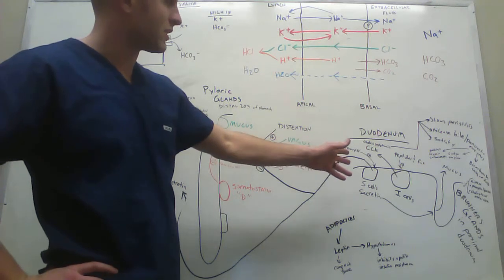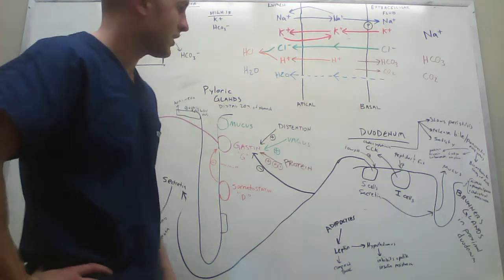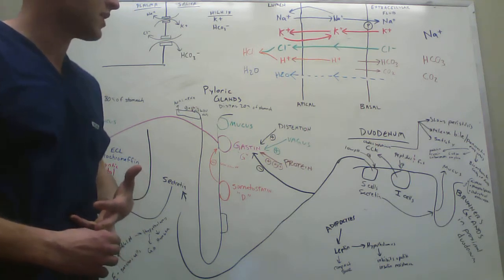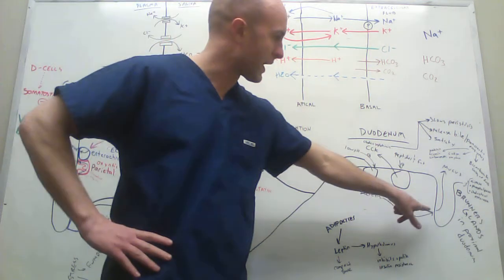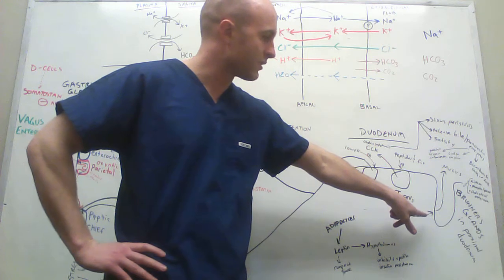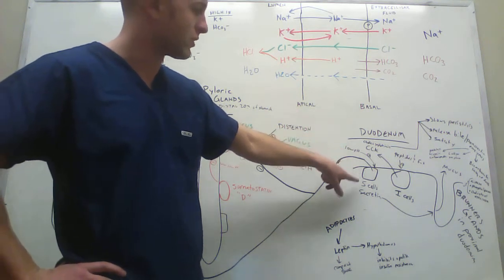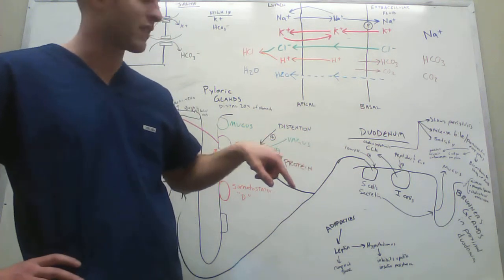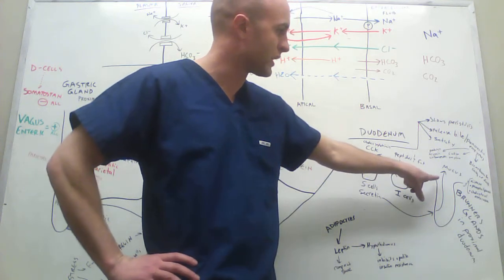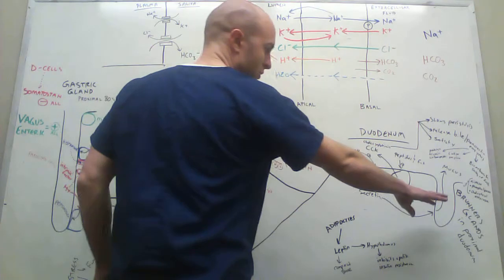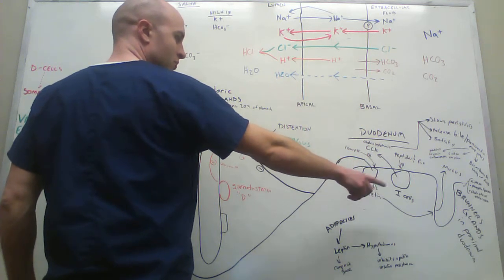These S cells release something called secretin. Secretin has a number of effects in the body. It sends a reaction over to these Brunner's glands and tells them to secrete mucus. It's a low pH that triggers the release of secretin from these S cells. So a really acidic environment is going to tell these S cells to release secretin, and that's going to tell the Brunner's glands to release mucus. The Brunner's glands are in the proximal duodenum as well.